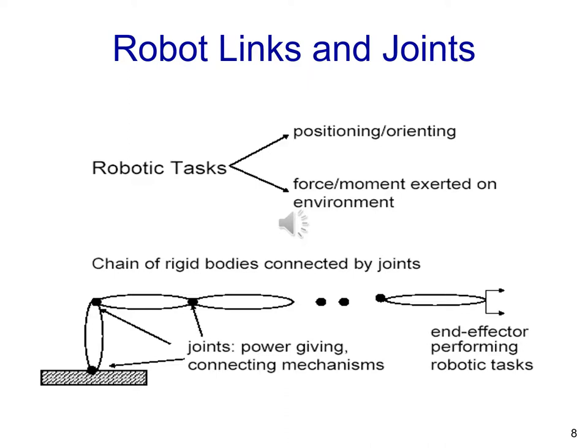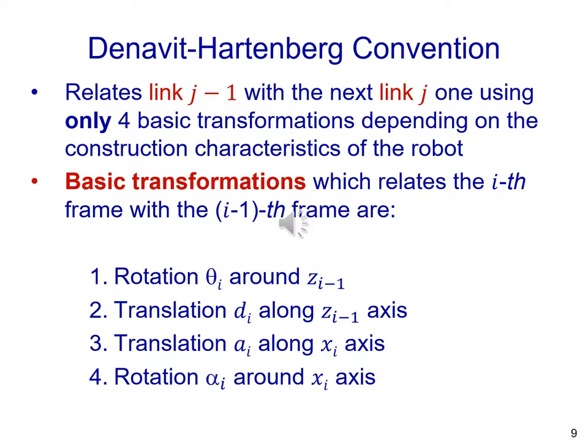In order to accomplish different robotic tasks we use robotic arms. A robotic arm can be thought of as a chain of rigid bodies which are connected by joints.